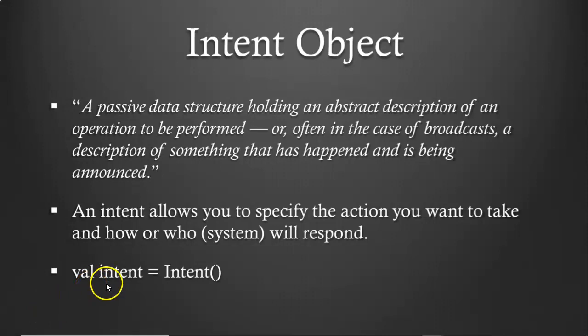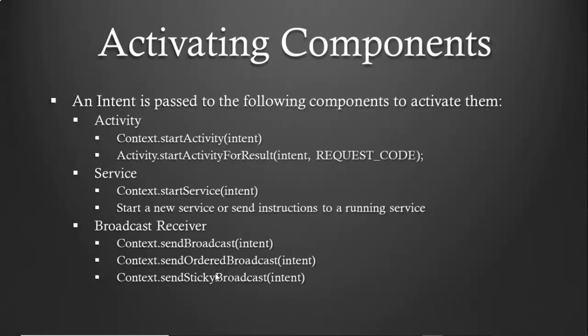So an intent is our way of specifying something that we want to happen and how the system will respond, and we can declare an intent very simply. In the Kotlin programming language we declare it just like so, although we might need to pass in some parameters in the constructor signature. There are a few different ways that we can activate components. An activity is something that the user can see — it could be a single screen or a series of screens within our own application, or it could be the look and feel of an outside component that we want to use, like the camera. Think about toggling the camera — it brings up a viewfinder that shows you what picture the camera is going to take, so that's a different look and feel.